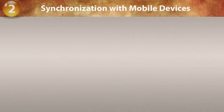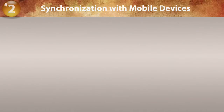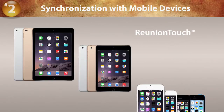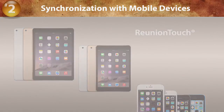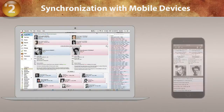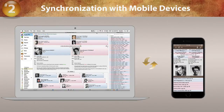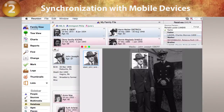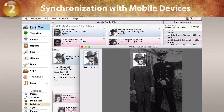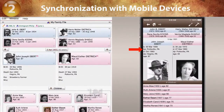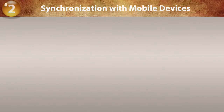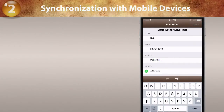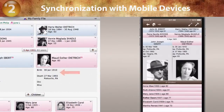Synchronization with mobile devices has been completely revamped in Reunion 11. Reunion Touch is our new mobile app, and it's a universal app, meaning it works on all of Apple's devices. Changes made on your Mac appear almost instantly on your devices, and vice versa. Here we change a birthplace and crop a picture on the Mac, and then in seconds the changes appear on our device. And vice versa — here we add a birthplace on the device, and in seconds the change appears on the Mac.